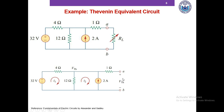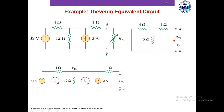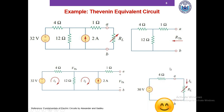Once we have computed Vth, we focus on computing the Thevenin resistance Rth. We replace the independent voltage source with a short circuit and the independent current source with an open circuit, giving us a simplified circuit. Looking into terminals A and B, the 4 ohm and 12 ohm resistors are in parallel, which can be replaced by a 3 ohm resistor. That 3 ohm and 1 ohm resistor are in series, so the Thevenin resistance is 4 ohms.